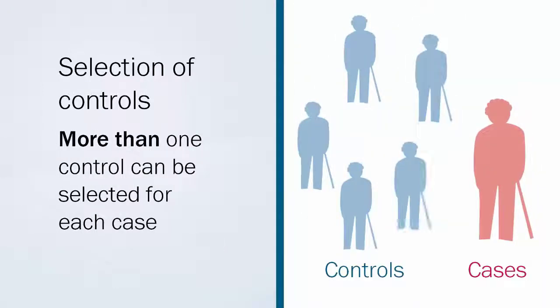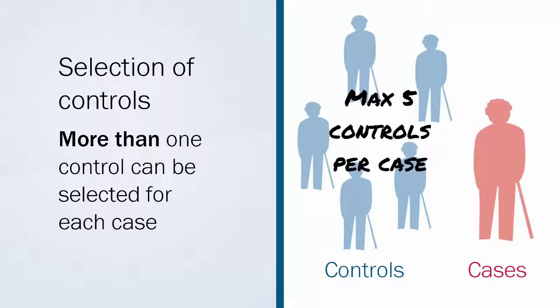More than one control can be selected for each case. This is useful when cases are rare, as it gives the same statistical precision for a smaller number of cases. The rule is a maximum of five controls per case. Having more than this will not give any additional advantage.